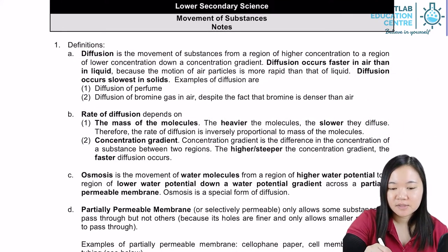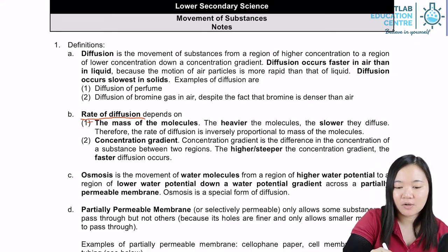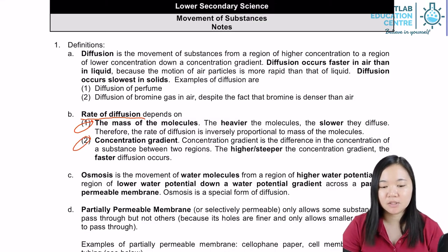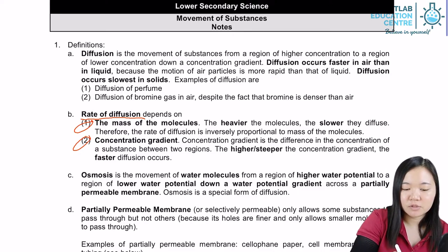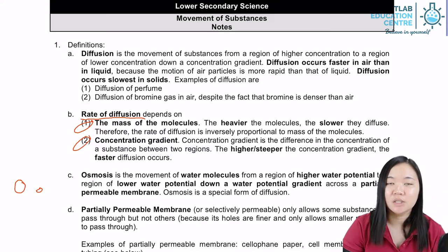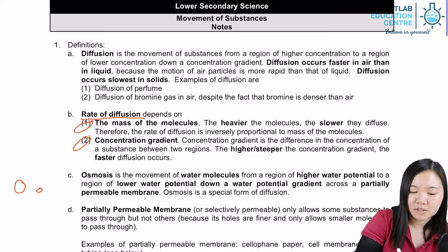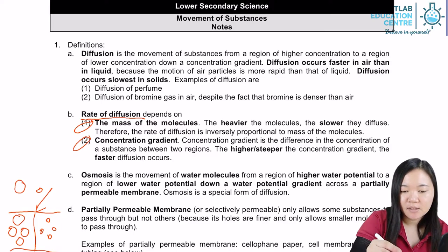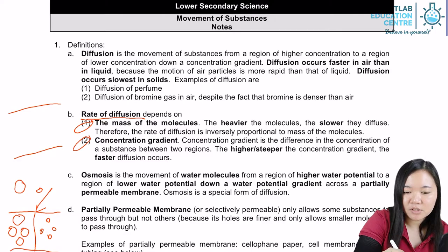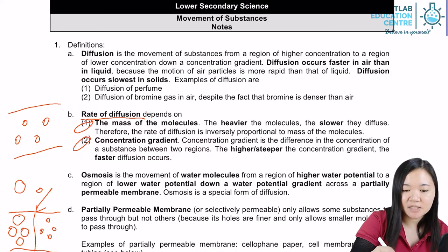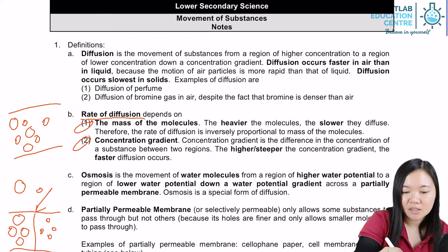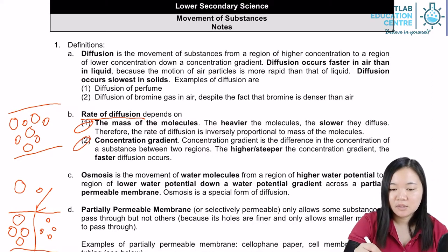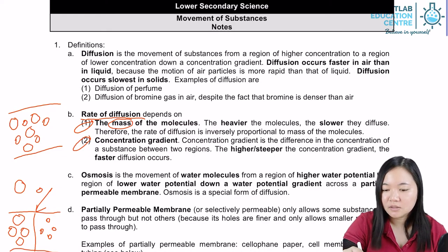The rate of diffusion depends on the mass of the molecules and also the concentration gradient. If a molecule is large, its mass is heavier than a relatively smaller molecule. If you have two substances — one made of larger, heavier molecules and one with smaller molecules — and you remove the dividing cardboard, the smaller molecules reach equilibrium faster. So the heavier the molecule, the slower it diffuses.